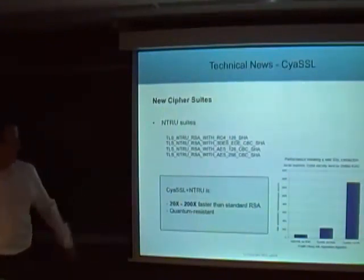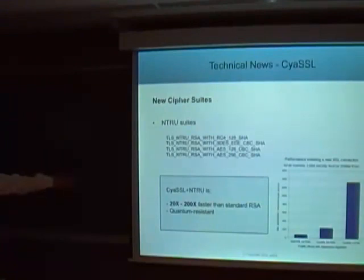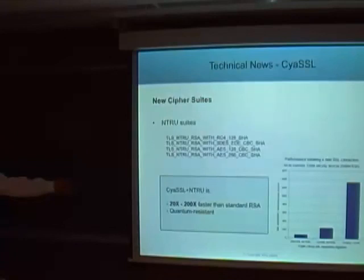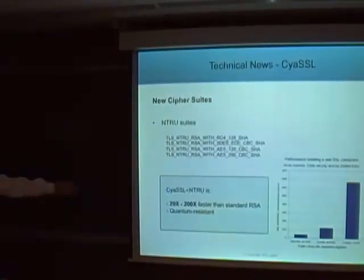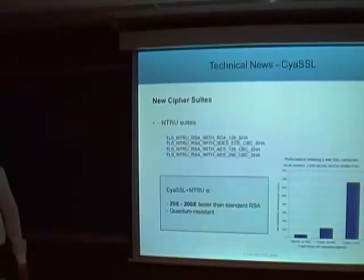This graph shows the performance of initiating a new SSL connection. On the y-axis is the maximum asymmetric transactions per second, and on the x-axis are different libraries with combinations of public key algorithms. You have OpenSSL with RSA at the far left, CYASL with RSA in the middle, and then CYASL with NTRU on the far right.